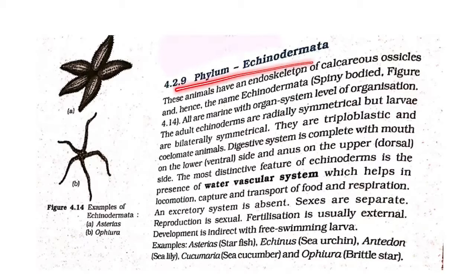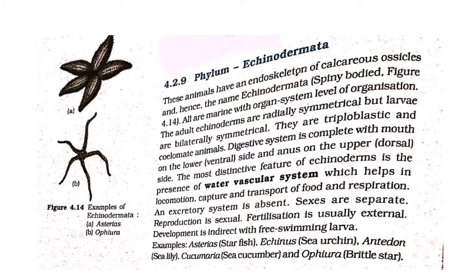Phylum Echinodermata: this animal has an endoskeleton of calcareous ossicles, and hence the name Echinodermata means 'spiny body'. All are marine with organ system level of organization.